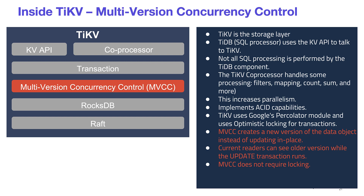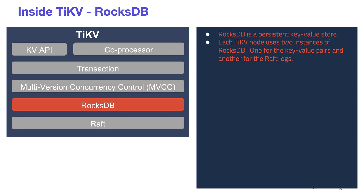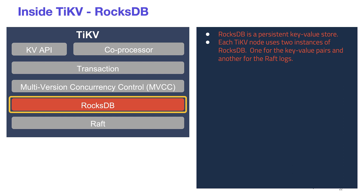How does TiKV persist data? It uses RocksDB — a persistent key-value store that is a component used by TiKV. We don't surface RocksDB directly, but use it indirectly. Each TiKV node actually uses two instances of RocksDB: one for the key-value pairs (the actual data being queried and written), and another RocksDB instance used for Raft logs.